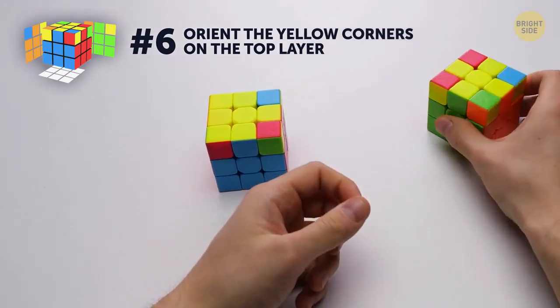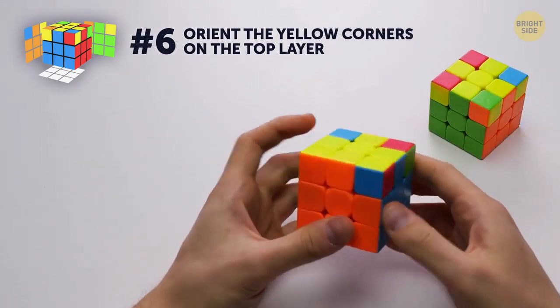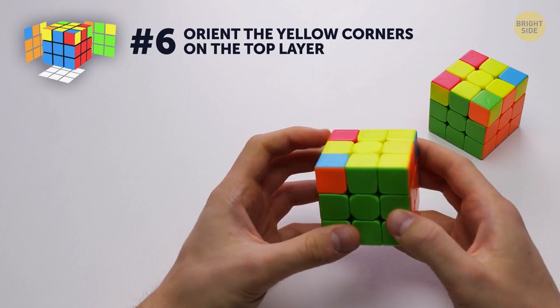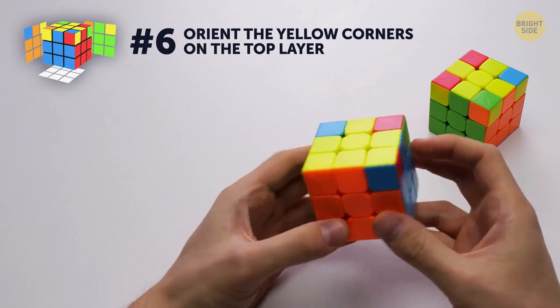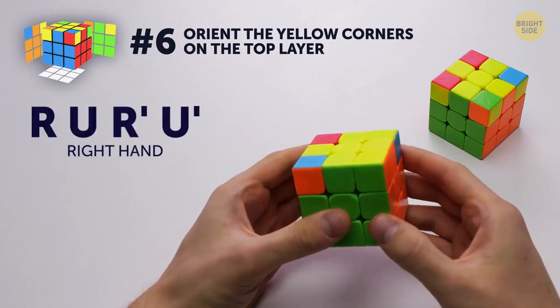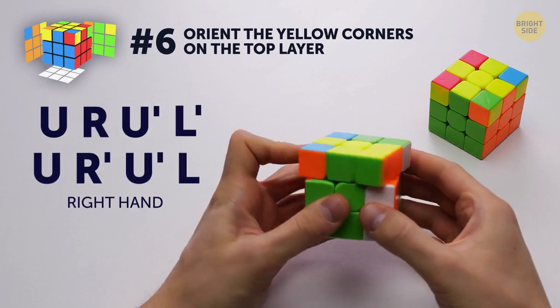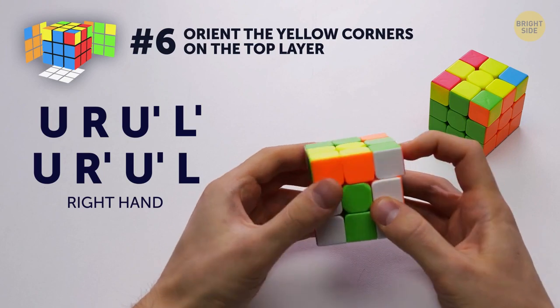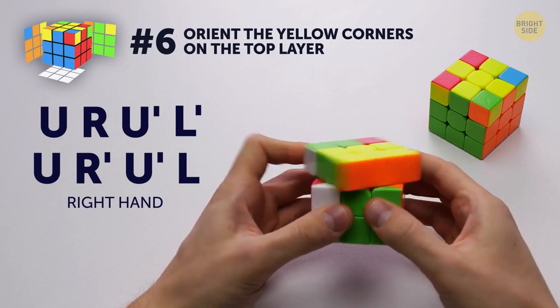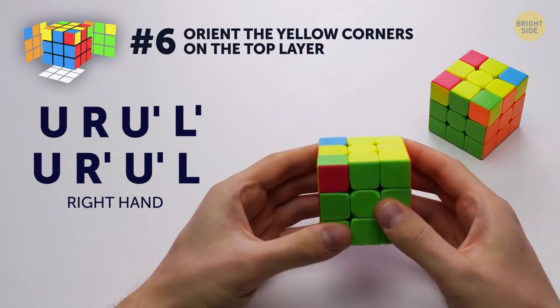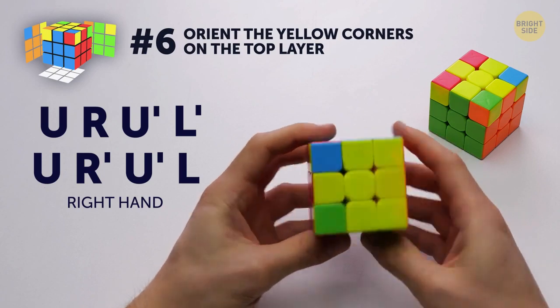Find the corner that's already in place. In this case, it's even rotated correctly, but that's not important. And use a slightly modified algorithm until the corners are in their places. Done!